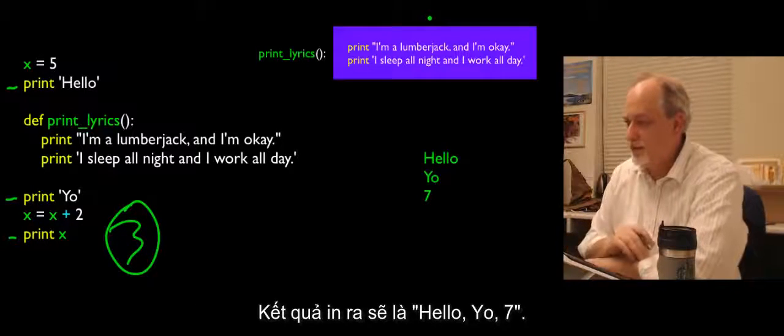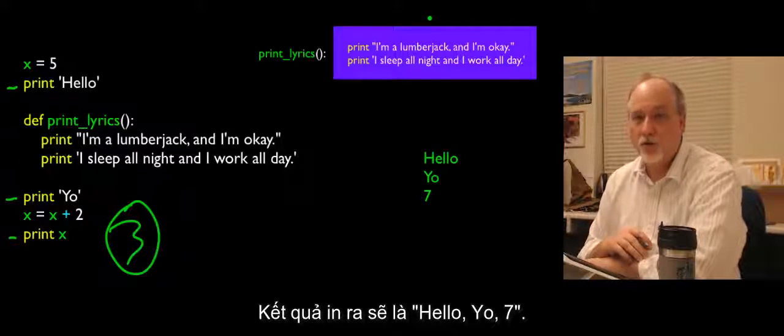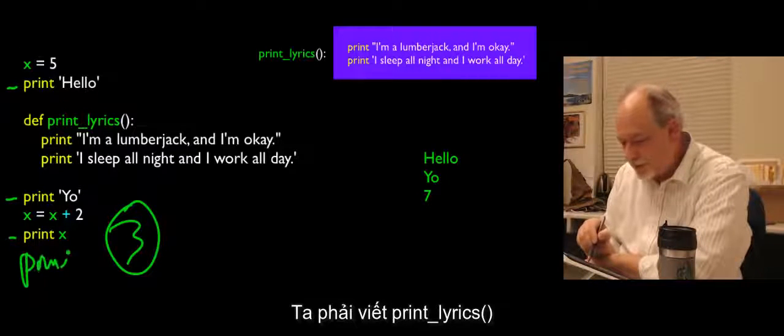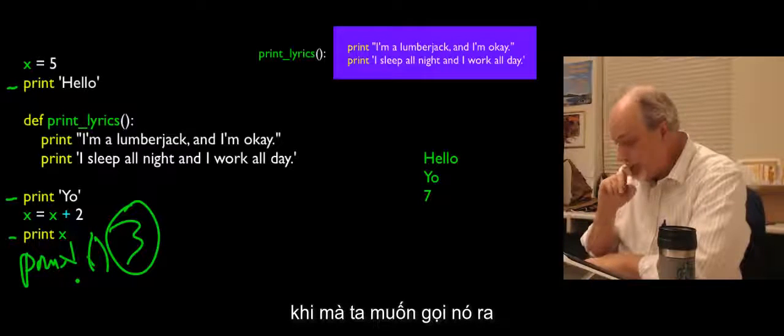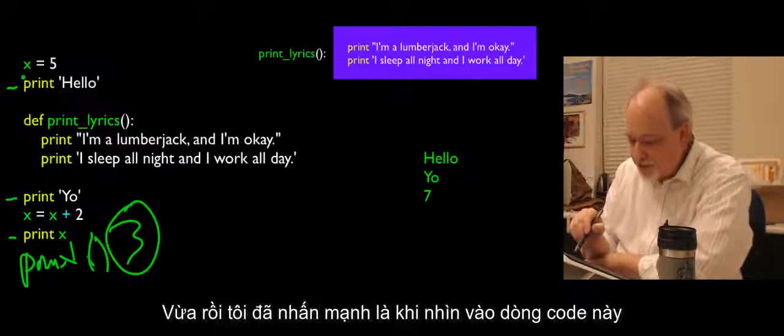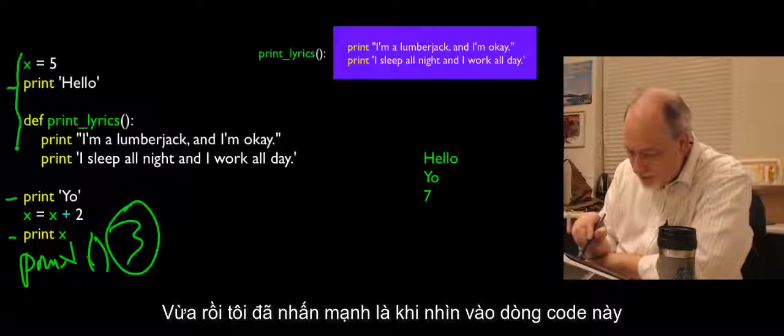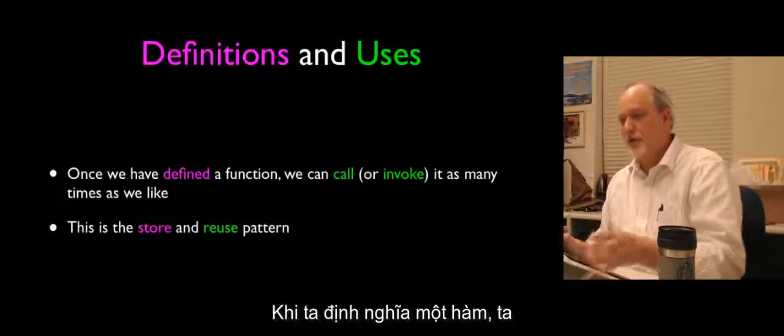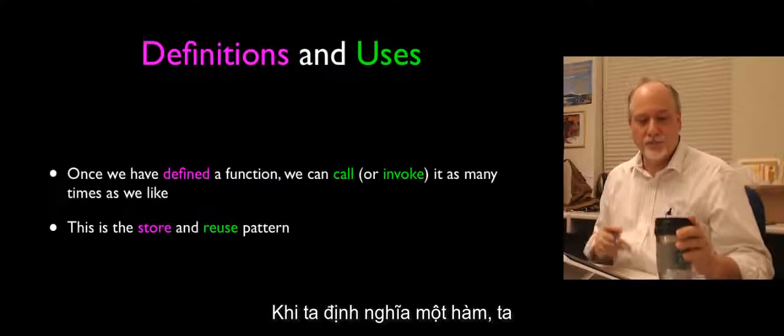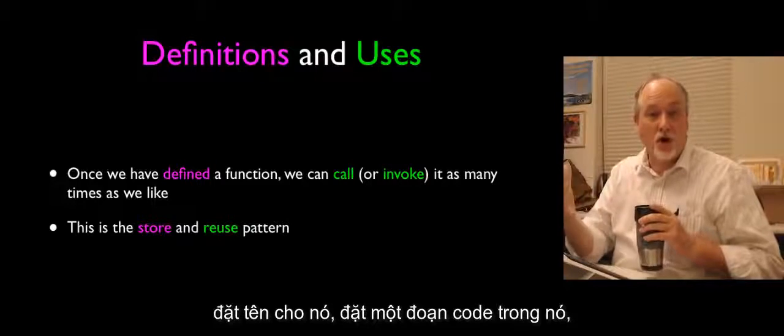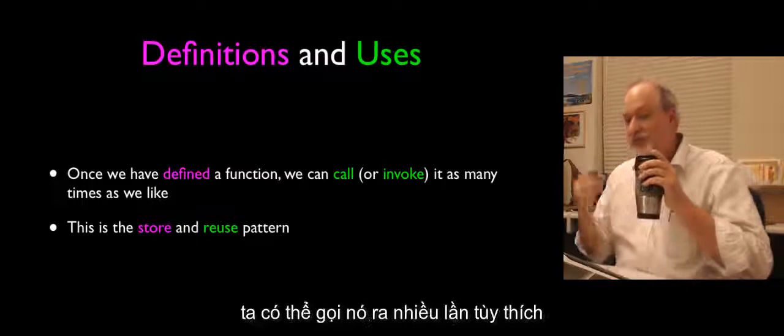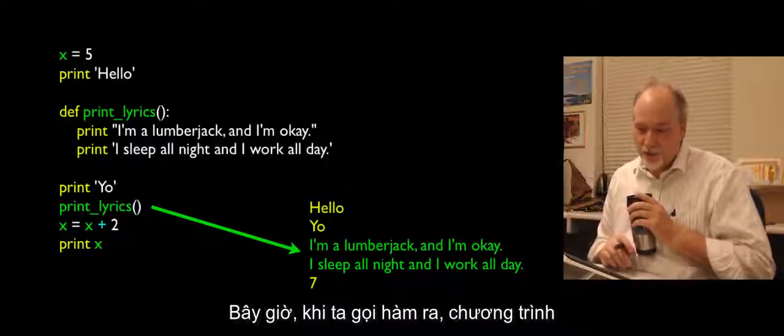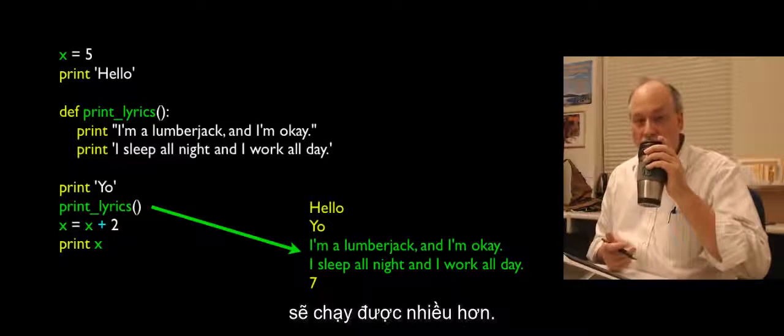So, the output of this is hello, yo, seven. And that's because we never actually invoked it. We had to say print lyrics parenthesis or whatever to cause it to call this. Okay? That's just to emphasize that as it looks at it, it does not execute these lines. So, once we defined a function, once we have given it a name, given it code that is a part of it, then we can invoke it or call it as many times as we like.